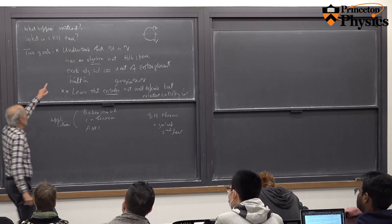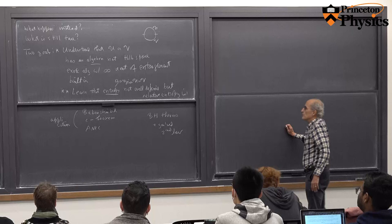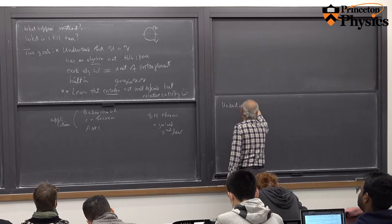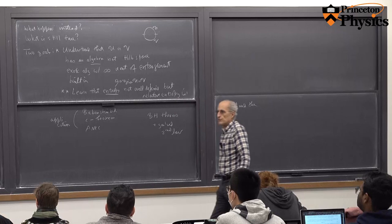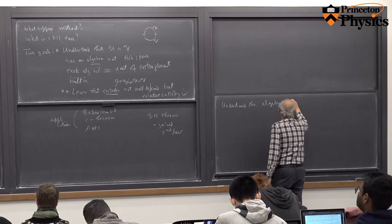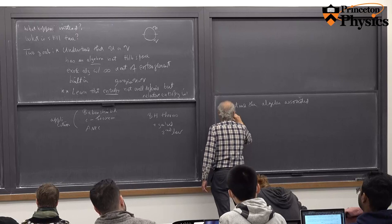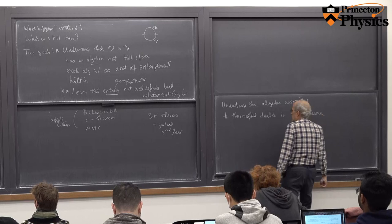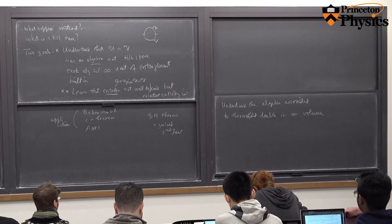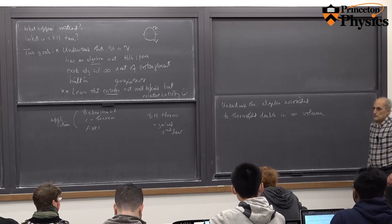For today, the two problems are equivalent: a region on the circle, or equivalently, the thermal field double in infinite volume — we've seen the equivalence by conformal mapping. So we want to understand the algebra associated to the thermal field double in infinite volume. We'll make very general comments that depend very little on what the Hamiltonian is. The considerations are so simple and general that we can start with the simplest Hamiltonian of all, which will be zero.